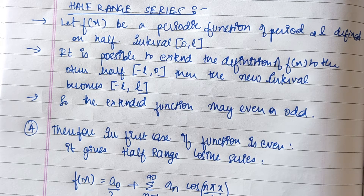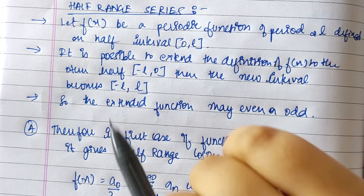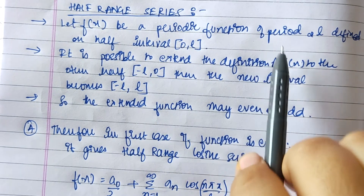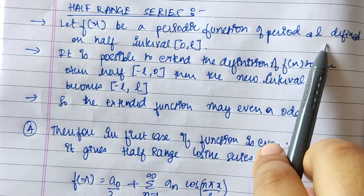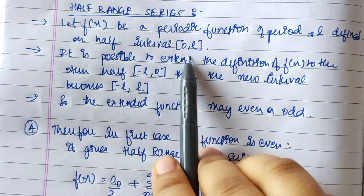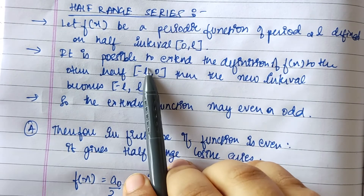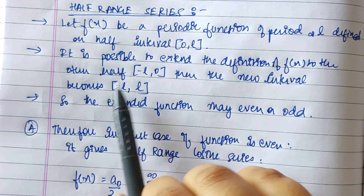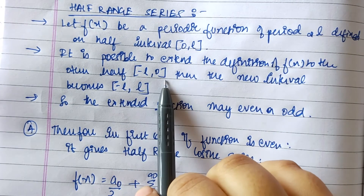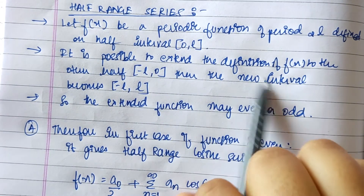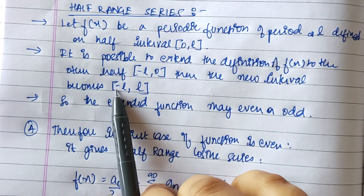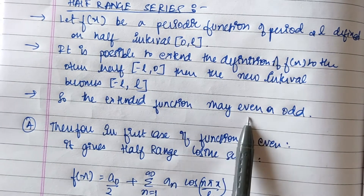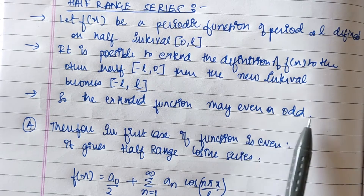In our fourth subtopic we have the half range series. Let f(x) be a periodic function of period 2L defined on a half interval 0 to L. It is possible to extend the definition of f(x) to the other half from minus L to 0, and then the new interval becomes minus L to L. The extended function may be even or odd.